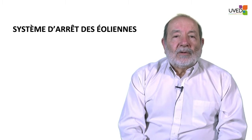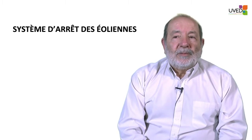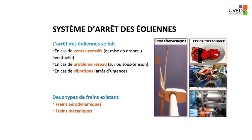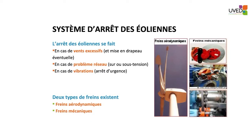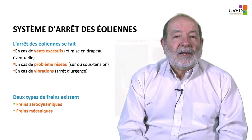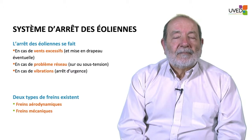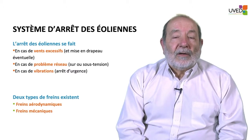This is also what happens with American windmills. The shutdown systems are of two types: windmills will be stopped if there is too much wind — more than 25 meters per second — most windmills will be feathered, and also if there is an electrical power supply problem or too many vibrations.